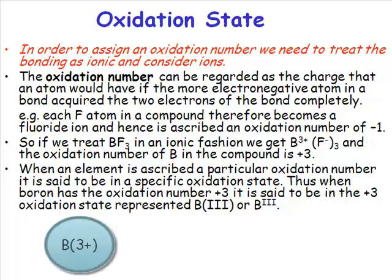That means we will have a boron 3+ species and a fluoride-. And if it is boron 3+, we say it has got the oxidation number of +3. And another way of saying that is in oxidation state three.